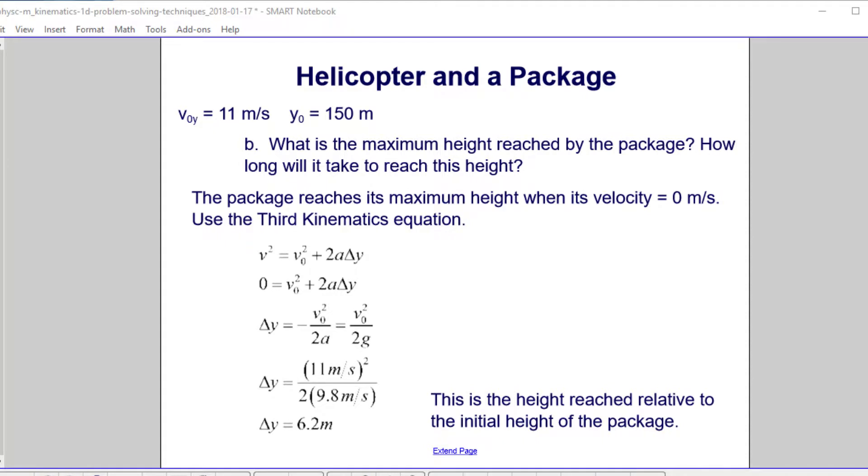We now want to find the maximum height reached by the package and how long will it take to reach that height. We know that you reach a maximum height when your object has a zero velocity. So since we want to find a displacement or a distance, and we know the acceleration and our initial velocity, and this is going to be our final velocity v, that's the third kinematics equation.